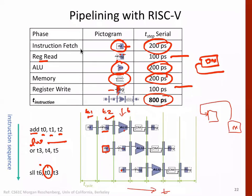With this understanding we'll stop here and continue in the next class. A key question is whether this pipeline works for all instructions — for example, if the second instruction is a load word (LW), and the next instruction reads the same register that LW is writing back to, there could be problems. In the next class we will see what problems arise in pipeline design and how to resolve them. Thank you.